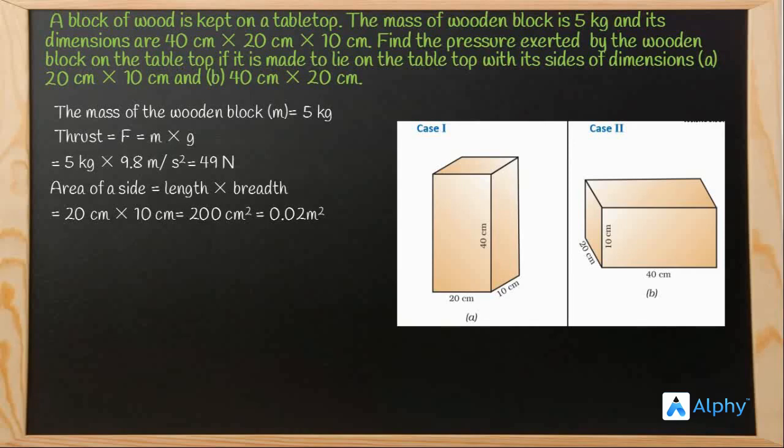Now we know that the formula of pressure is equal to thrust per area. So we are going to put this value in this formula. The thrust is 49 newton and the area is 0.02 m square. So pressure is equal to 49 newton divided by 0.02 m square which is 2450 newton per meter square.